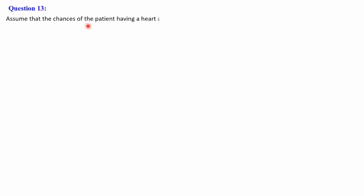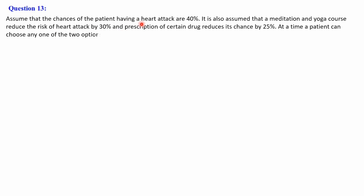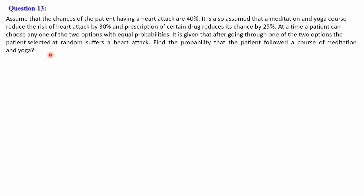Next we shall discuss question number 13. Assume that the chances of the patient having a heart attack are 40%. It is also assumed that a meditation and yoga course reduces the risk of heart attack by 30%, and a prescription of certain drugs reduces the chance by 25%. At a time, a patient can choose any one of the two options with equal probabilities. Given that after going through one of the two options the patient suffers a heart attack, find the probability that the patient followed a course of meditation and yoga.